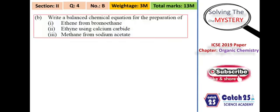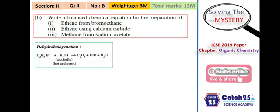The next question asks for the balanced chemical equation for the preparation of ethene from bromoethane. This preparation part is not in the 2021 board examination syllabus, but you can still review it. From bromoethane (ethyl bromide), to prepare ethene you must remove one H and one Br — this is dehydrohalogenation. The reaction uses alcoholic KOH, a strong base, which removes H and Br to give ethene.